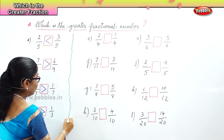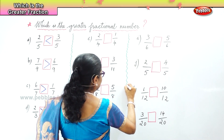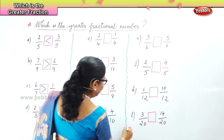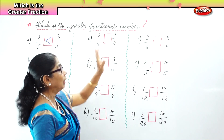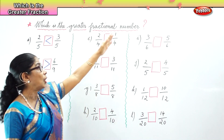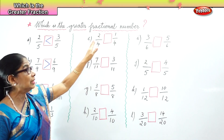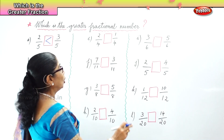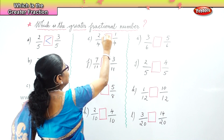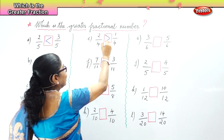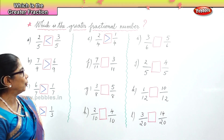In the next sum we have two by four and one by four. The denominators are the same — the whole is divided into four parts. We have one by four and two by four. The two is bigger than one, and the denominators are the same. So two by four is greater than one by four.